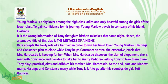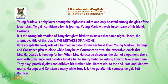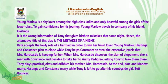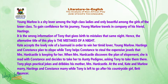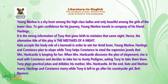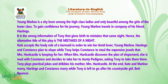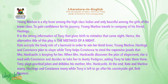When Mrs. Hardcastle discovers the plan of elopement, she is mad with Constance and decides to take her to Aunt Pedigree, asking Tony to take them there. Tony plays practical jokes and dribbles his mother Mrs. Hardcastle. At the end, Kate and Marlowe marry, Hastings and Constance marry, while Tony is left to go after his countryside girl Betty Bonsan.